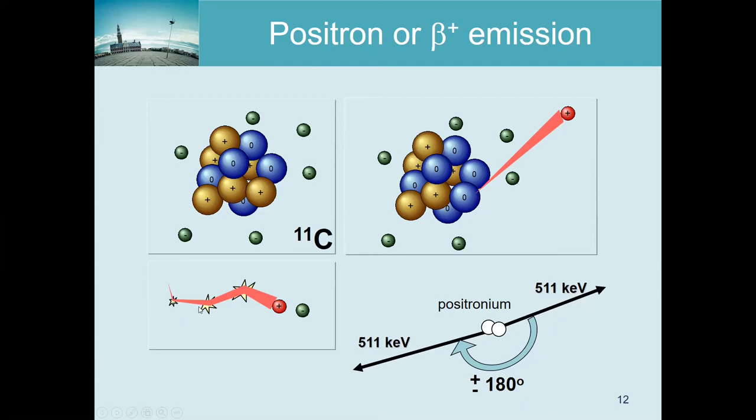So it first needs to get rid of that energy, and it does so by interacting with electrons, causing ionizations while it does that, until it has released almost all of its kinetic energy. Then it will meet an electron, and then both of them will be converted to two photons. And that can happen immediately, or they can create a positronium, which is a kind of particle consisting of a positron electron that together form an unstable particle.